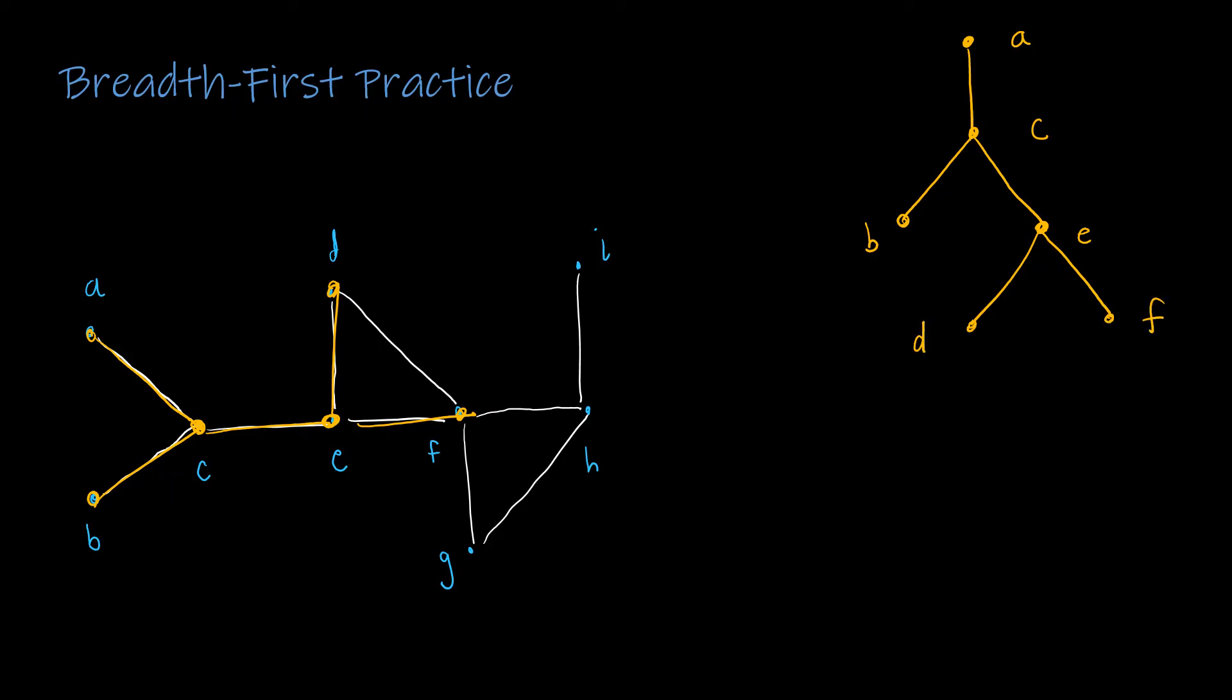Again, I'm going to use alphabetical order as my guide. So from D, I can connect only to F, which we've already visited. So I'm now going to branch off of F to visit both G and H.